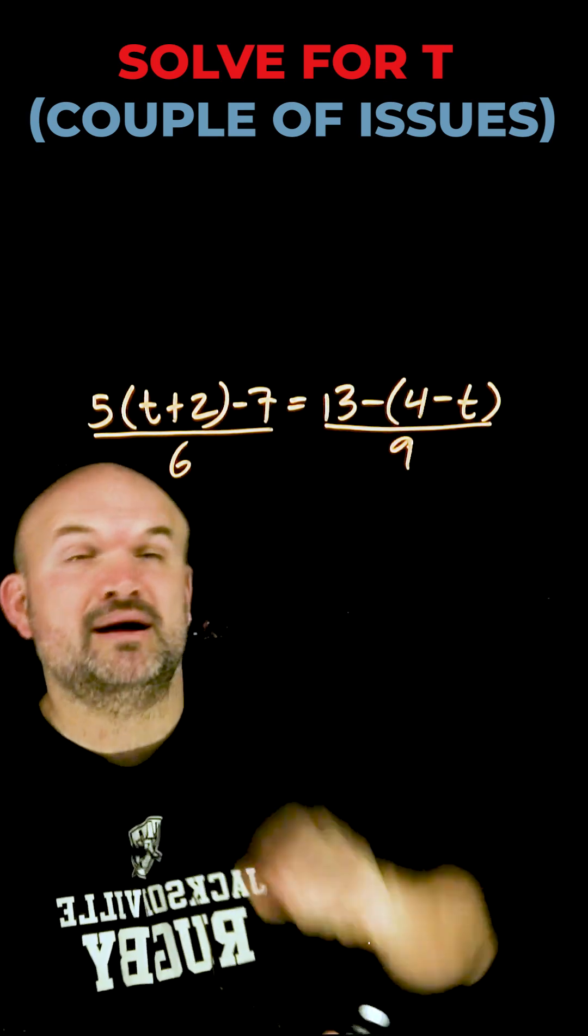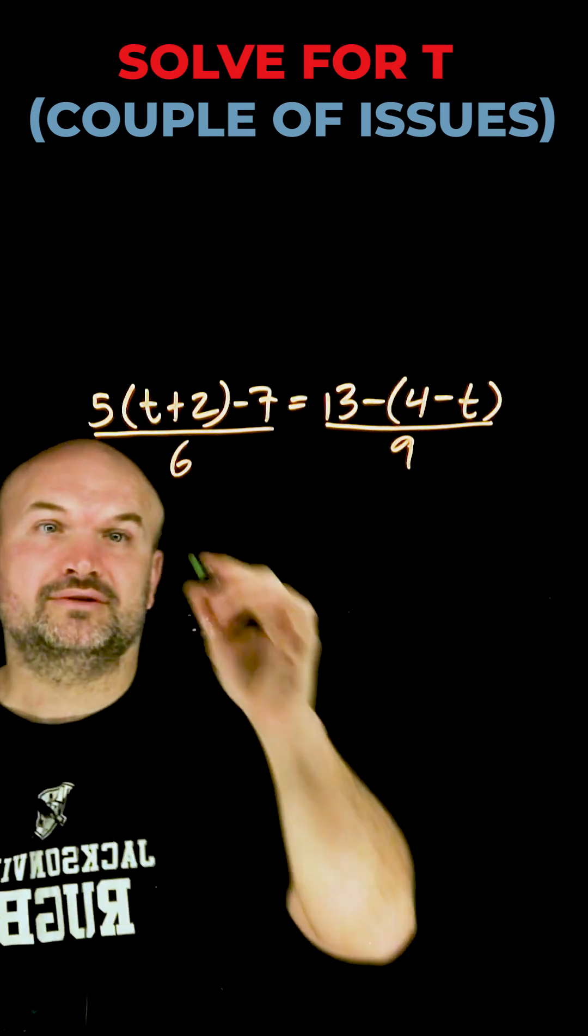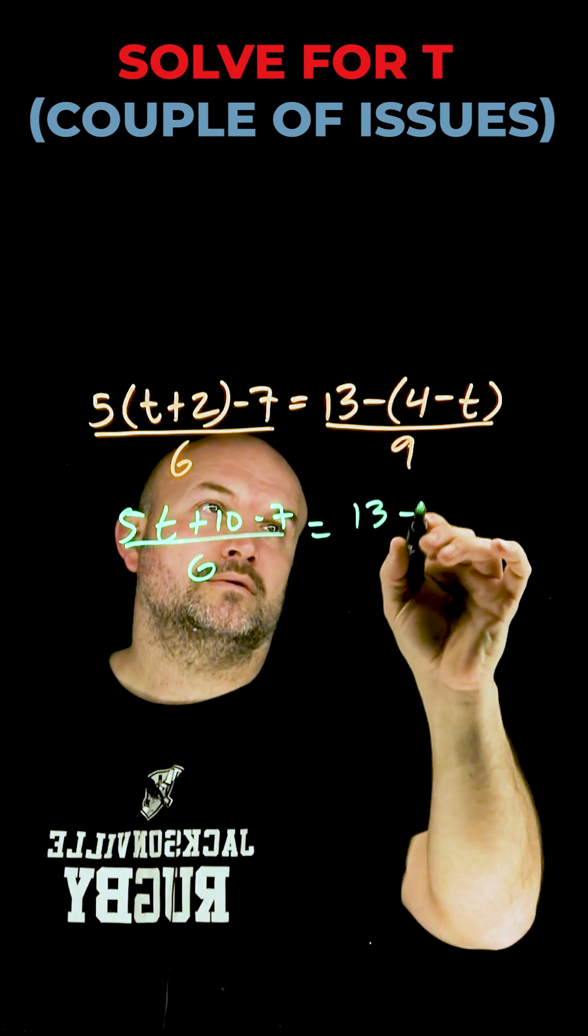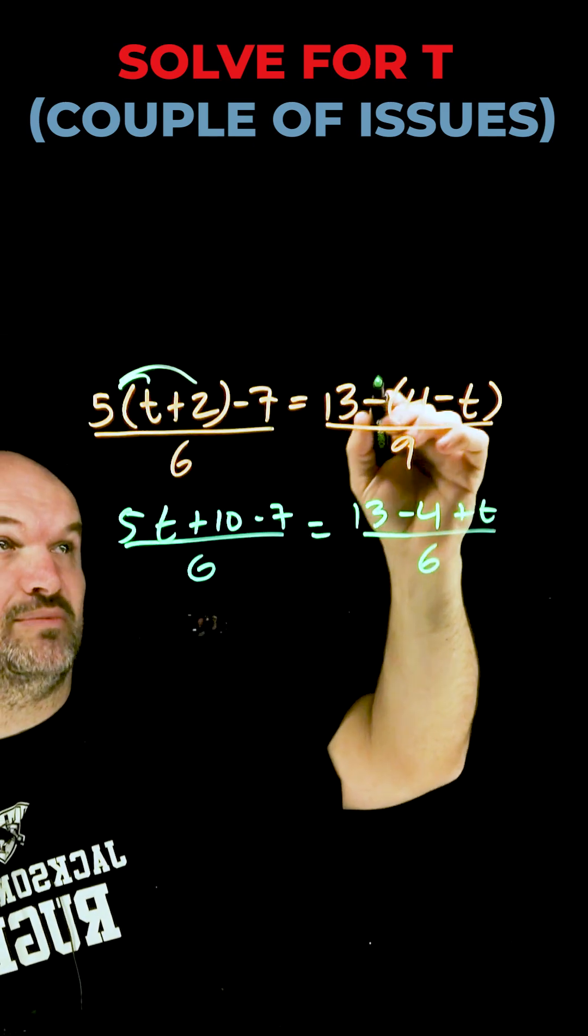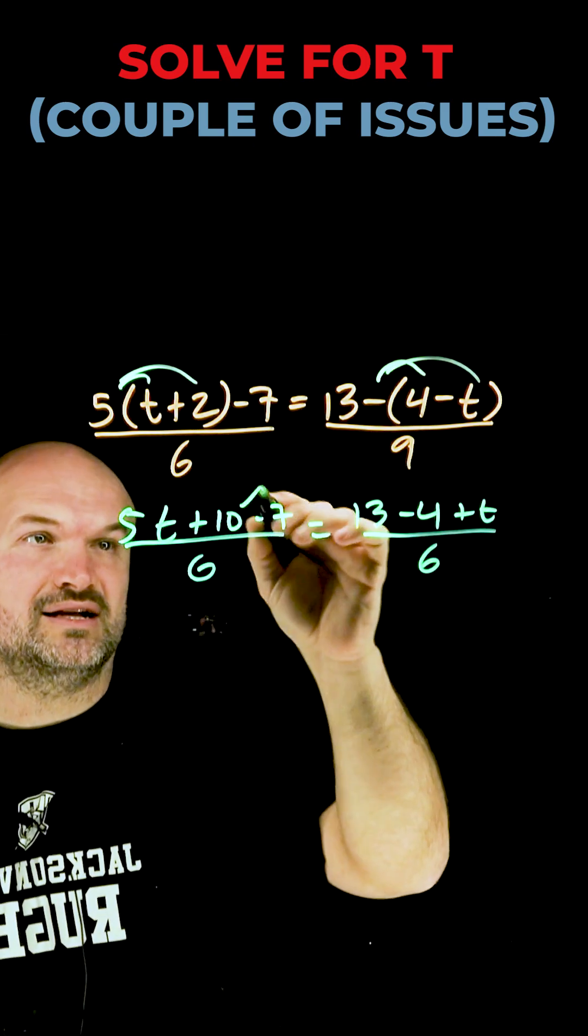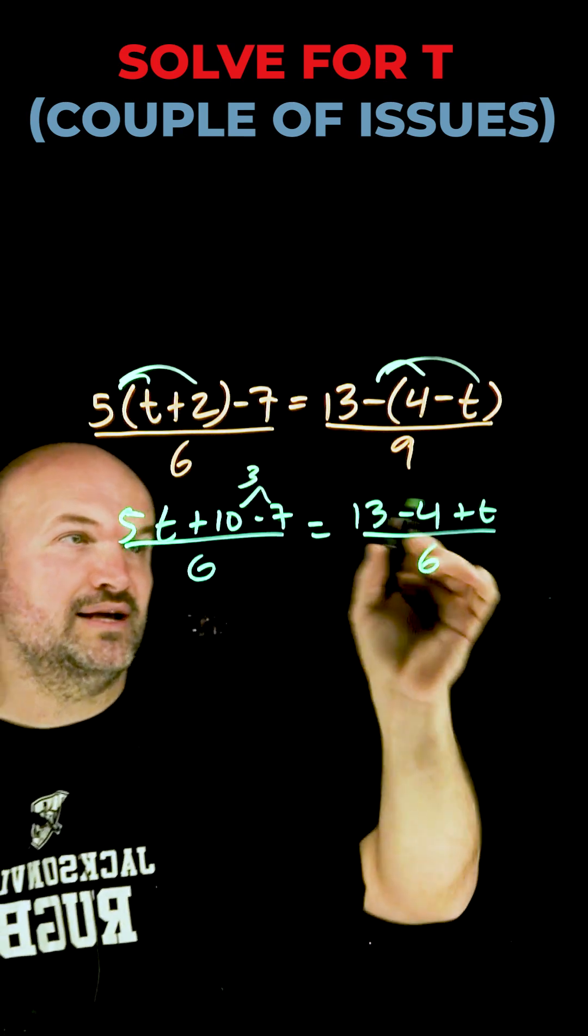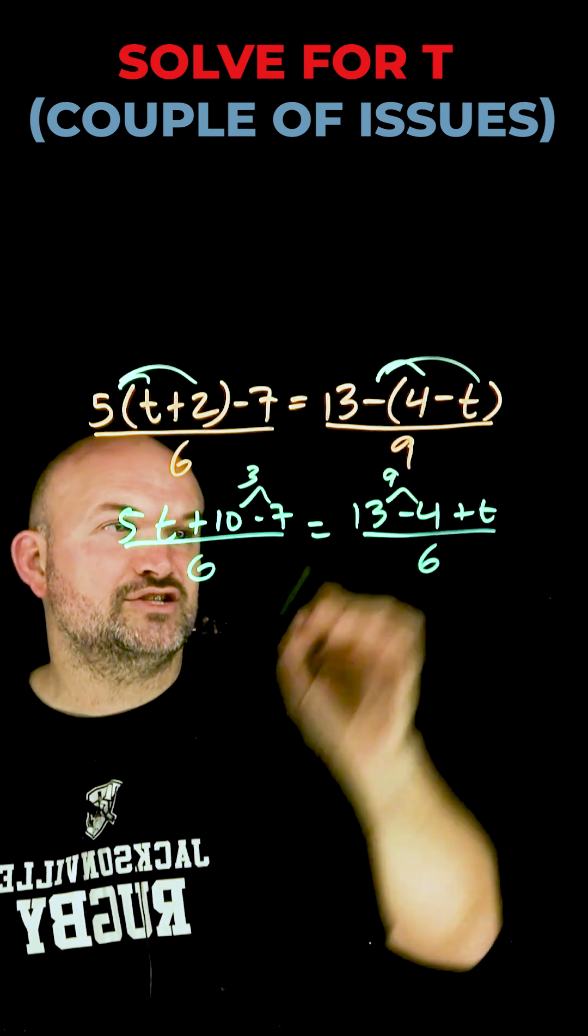So the first thing I'm going to do is get rid of my parentheses by applying my operation. So you can see all I simply did there was just apply the distributive property. Now, I can combine these like terms. That's going to be a 3. And a 13 minus 4, that's going to combine to a 9.